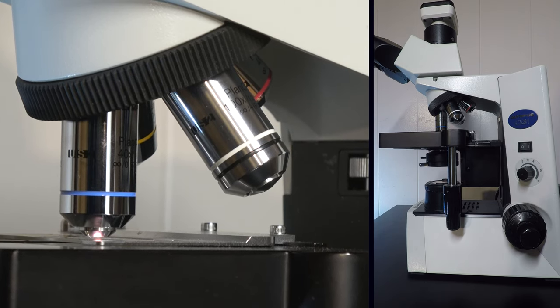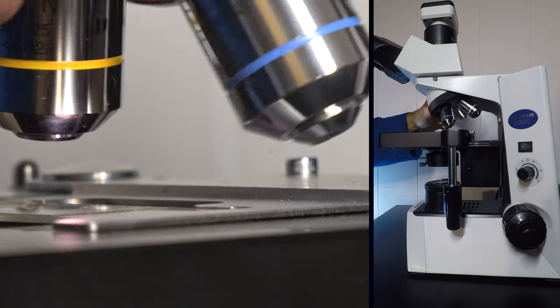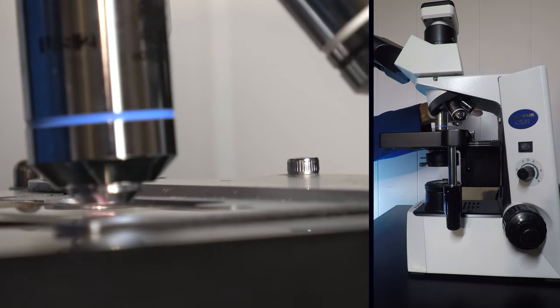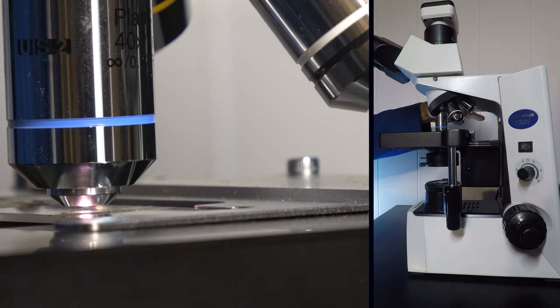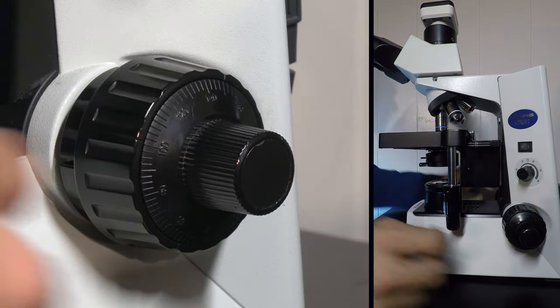When using these higher powered lenses, you want to carefully rotate them into place. The slide and lens should not make contact. The distance between the slide and the lens is called the working distance and will decrease as you increase objective size.